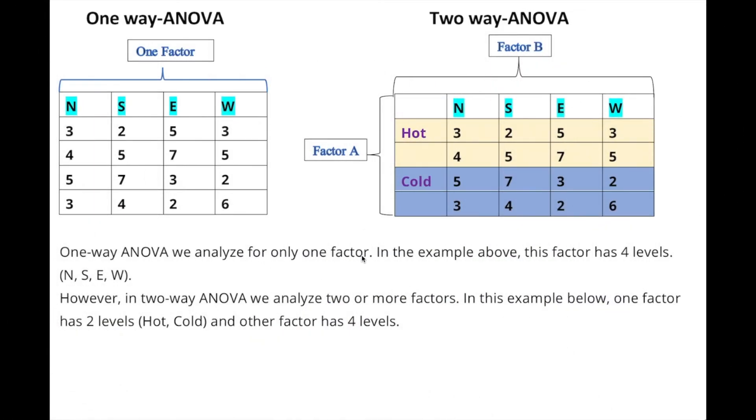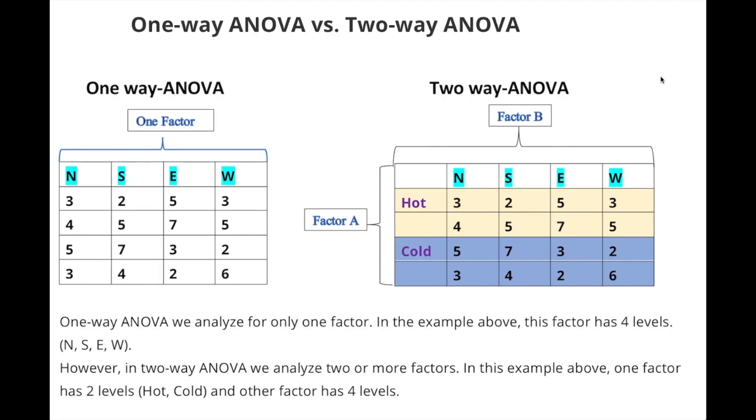Now we can say that one-way ANOVA we analyze for only one factor. In the example above, this factor has four levels: North, South, East, West. However, in two-way ANOVA we analyze two or more factors. This is one-way ANOVA versus two-way ANOVA. I hope we understand now.